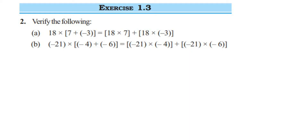Hello everyone, here I am doing exercise 1.3, second question. The chapter is integers from class 7. The question is: verify the following. Whenever they ask you to verify, it means you have to check that LHS and RHS are equal. They have given two questions here, and it is actually a distributive property that we have to verify.